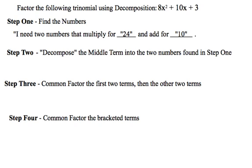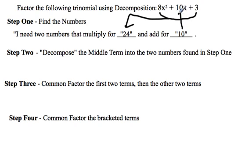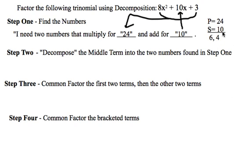A reminder that the 24 comes from 8 times 3 — that's these two together — which gives the 24. And the sum, or 10, just comes straight from there. So I am looking for two numbers that multiply for 24, add for 10, and I have those numbers to be 6 and 4.